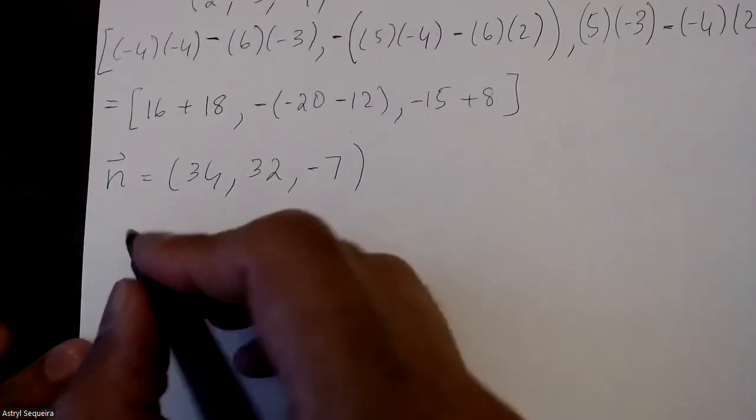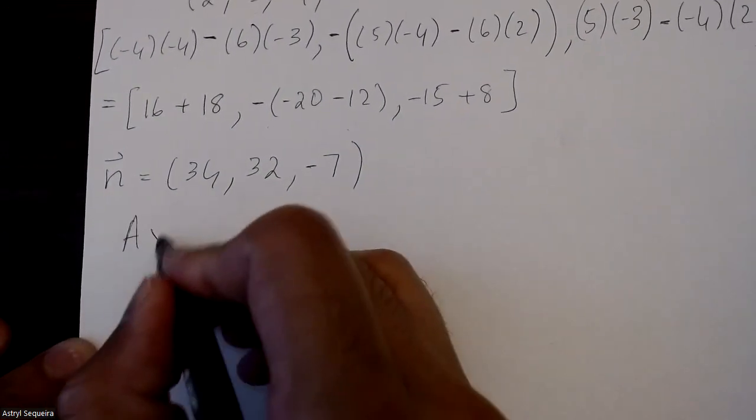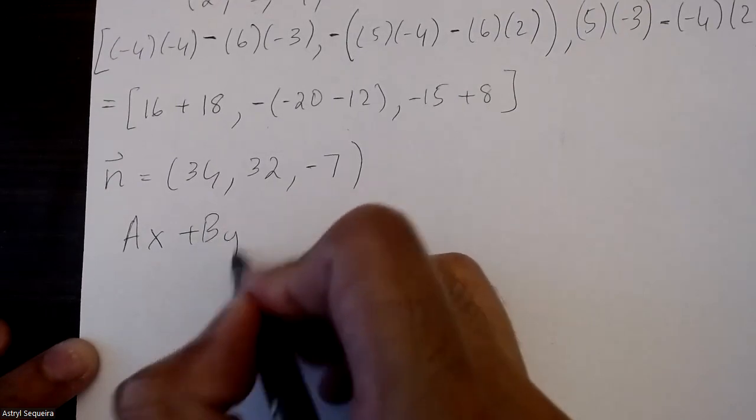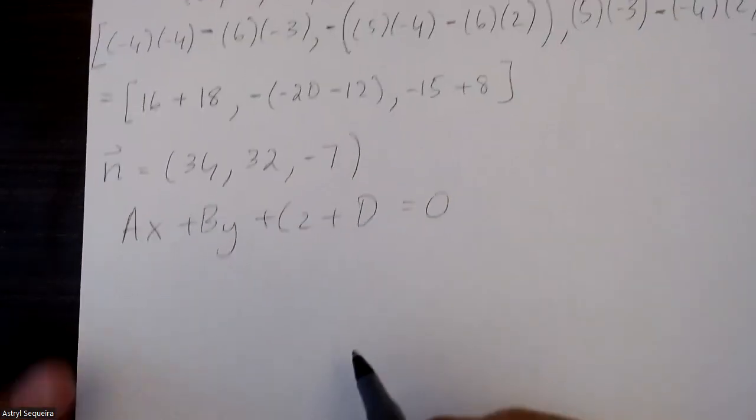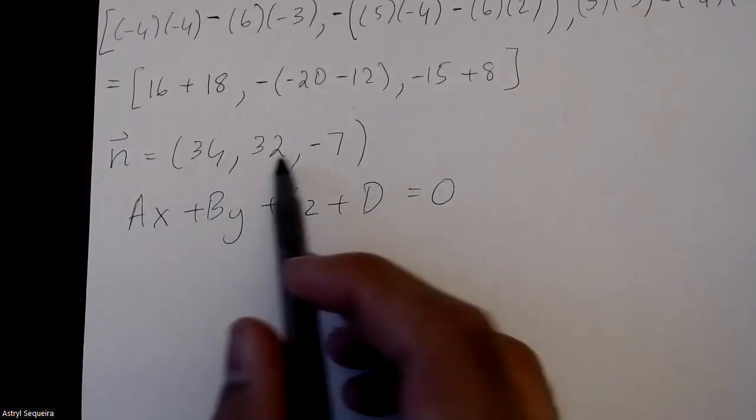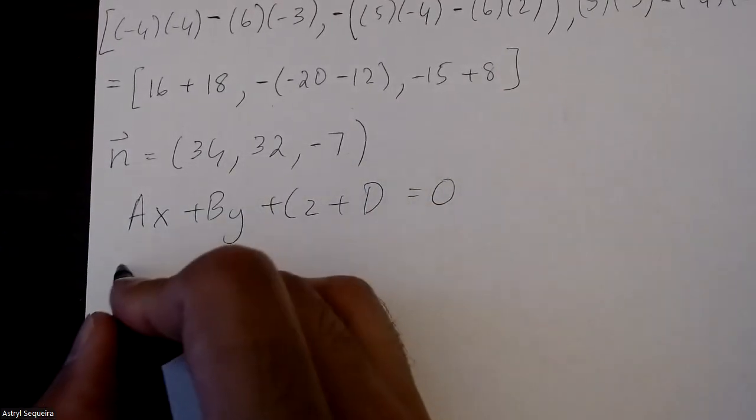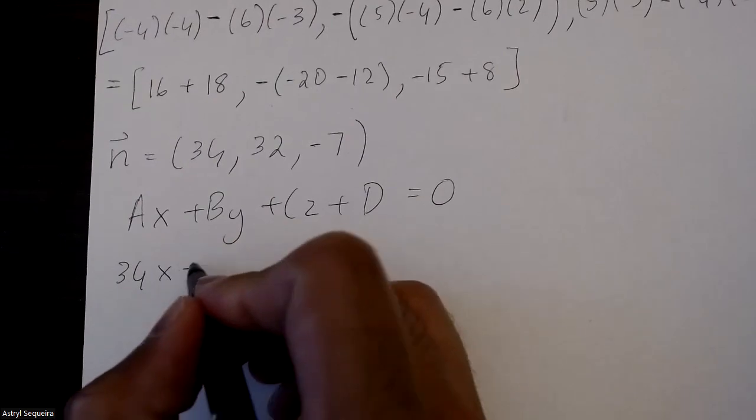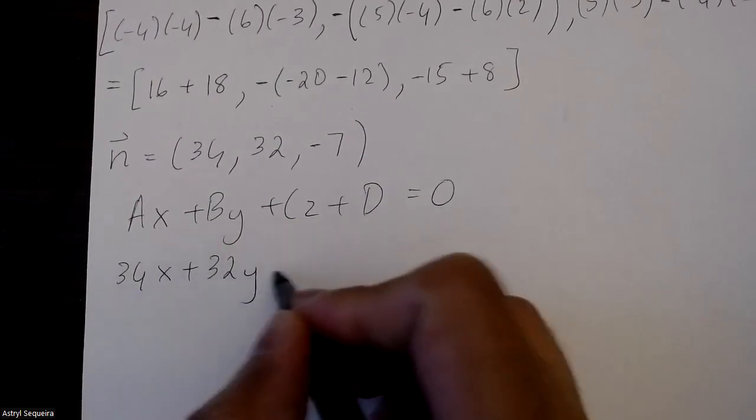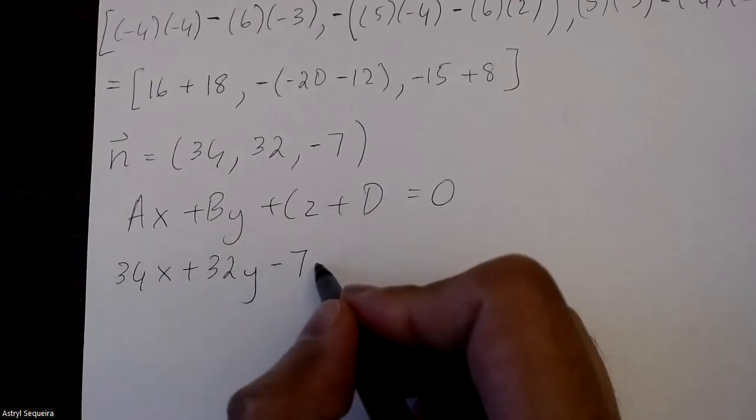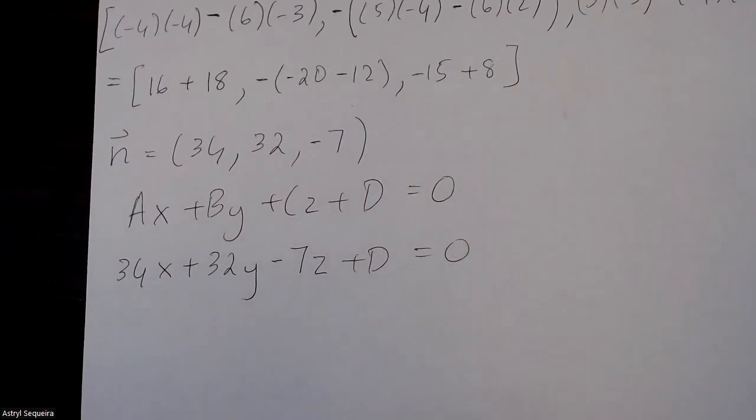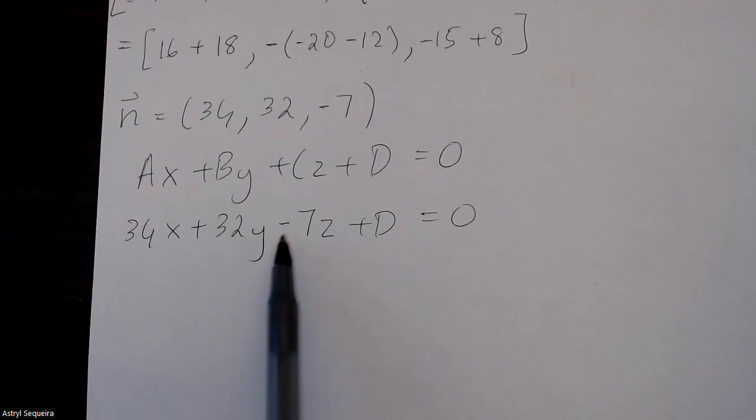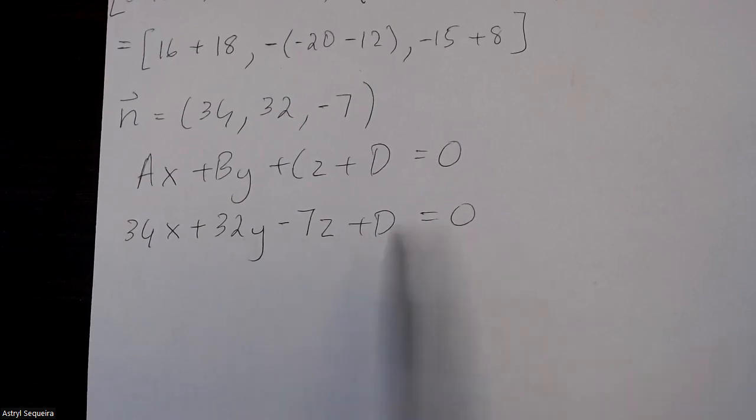Now I can use my normal vector for my Cartesian form of my plane, which is ax plus by plus cz plus d equals 0. I know that the normal vector is my a, b, and c, so 34x plus 32y minus 7z plus d equals 0. And I just have to sub in a point for x, y, z and find my d value.